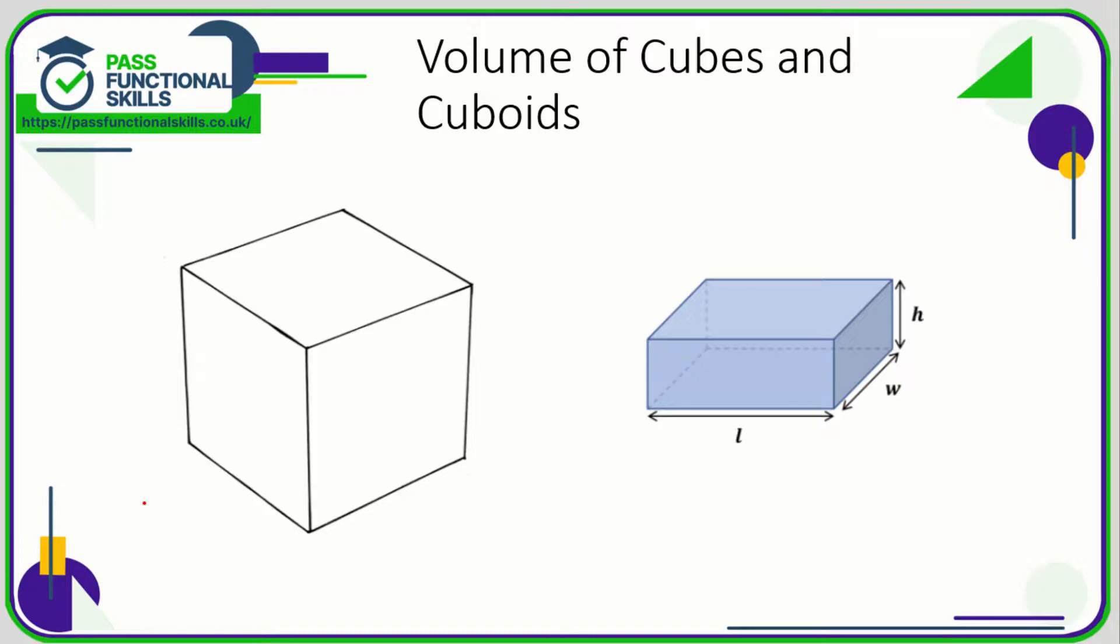Let's take a look at the volume of various shapes. First, the volume of a cube. In a question they might only give you one dimension for a cube. They might say that it's got a side length of 16 centimeters. Well that's fine because all three dimensions are the same.